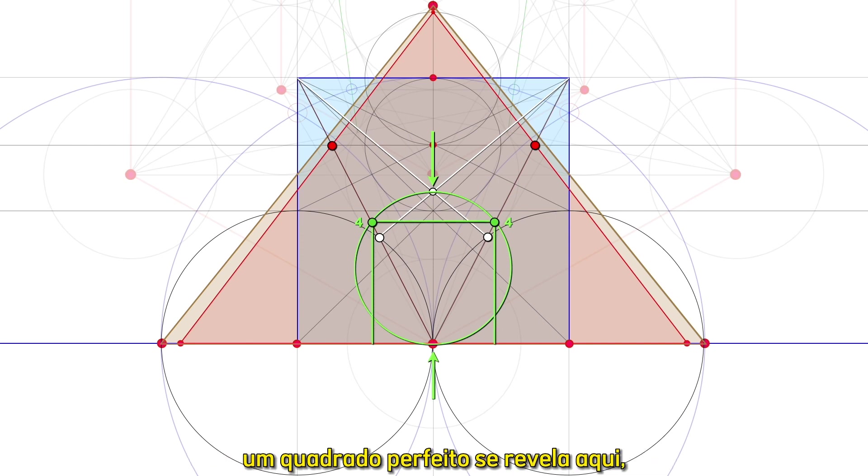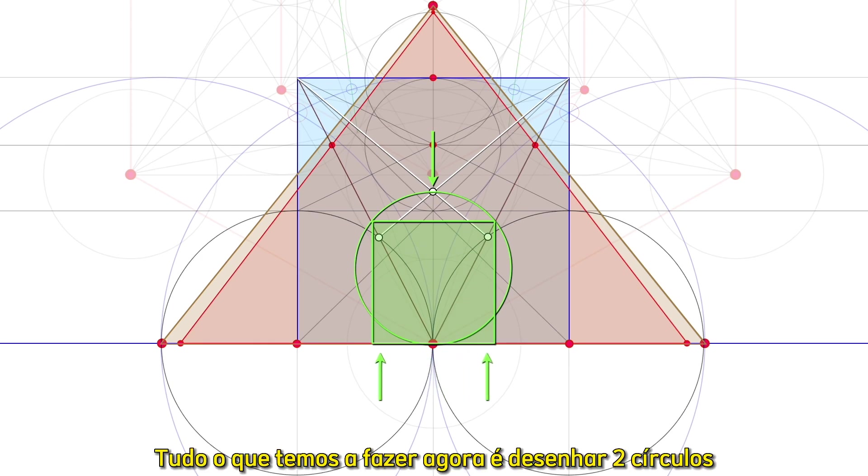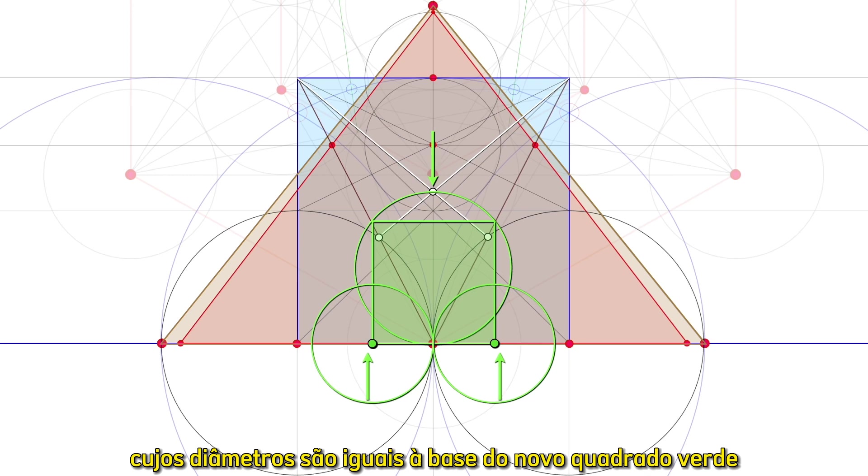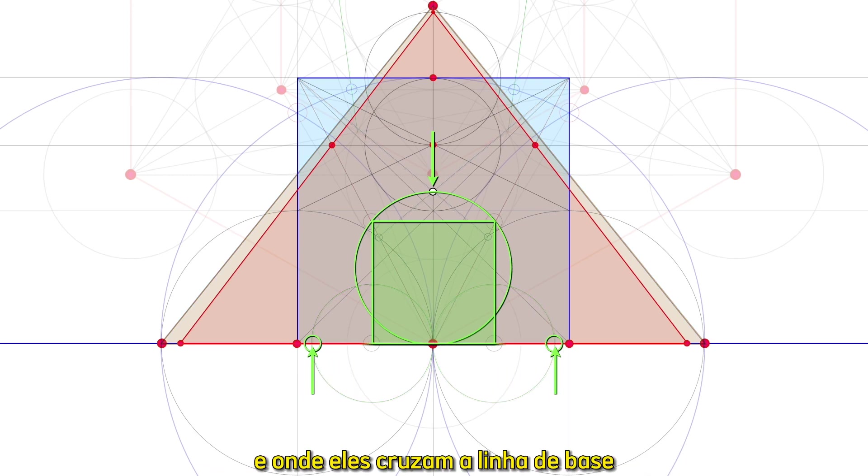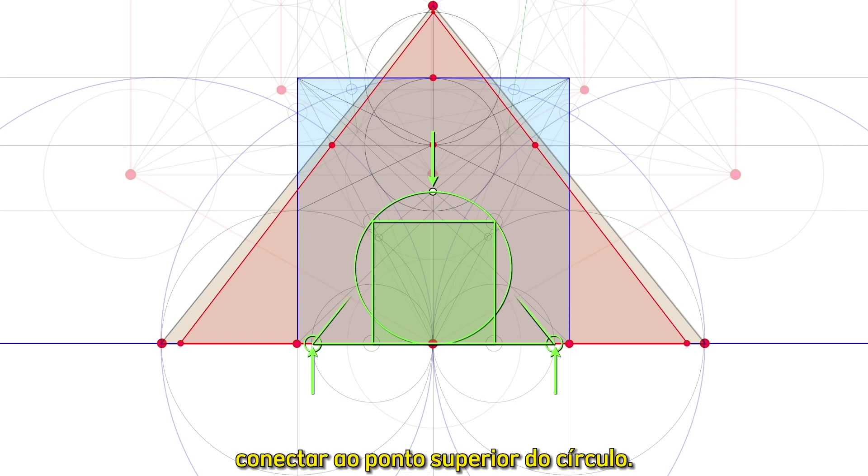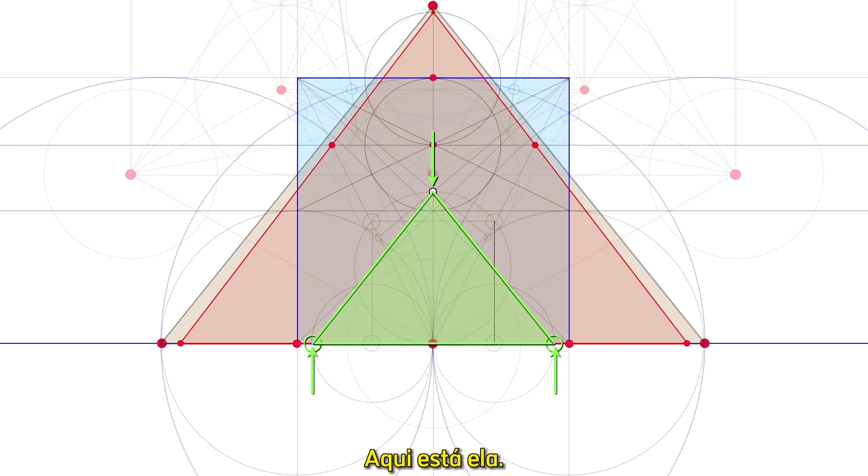It turns out there are actually four significant intersections. A perfect square reveals itself here, whose corners precisely intersect the circle at those half diagonals, just as we saw in the construction of Khafre based on the Khufu square. All we have to do now is draw two circles whose diameters equal the base of the new green square. And where they intersect the baseline, connect to the upper point of the circle.